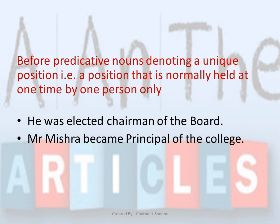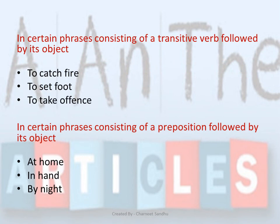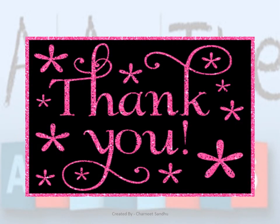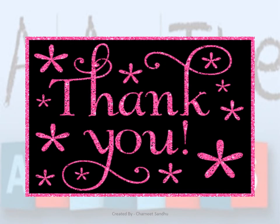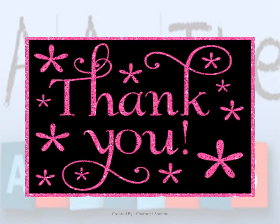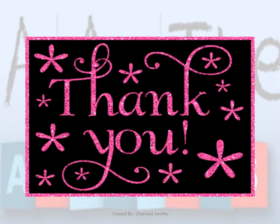Before predicative nouns denoting a unique position, we don't use an article — for example: 'He was elected chairman of the board' or 'Mr. Mishra became principal of the college.' Articles are also omitted in certain phrases consisting of a transitive verb followed by its object, and in certain phrases consisting of a preposition followed by its object. There are many rules to remember, but don't worry — these are only for your knowledge. When you practice exercises based on these rules, you will slowly get the hang of the topic.